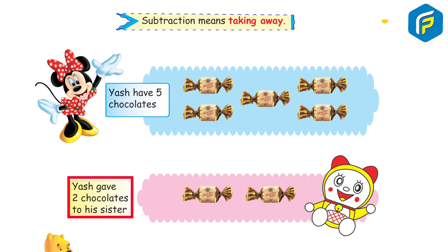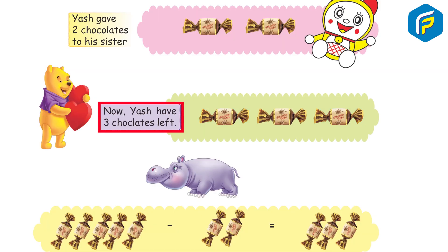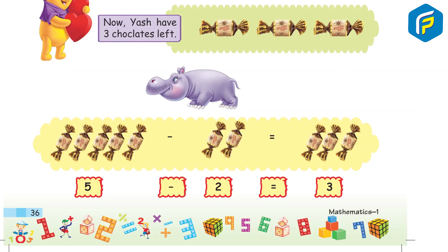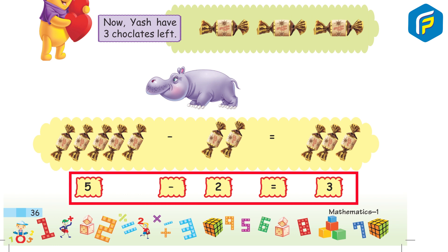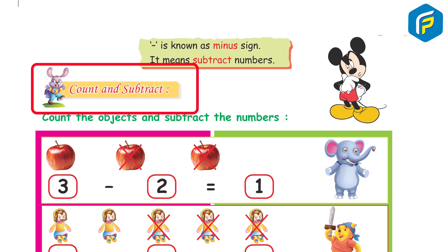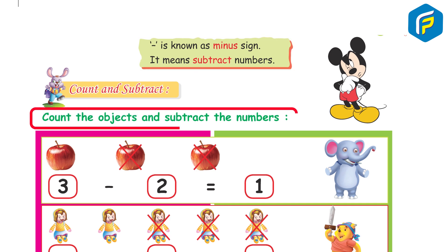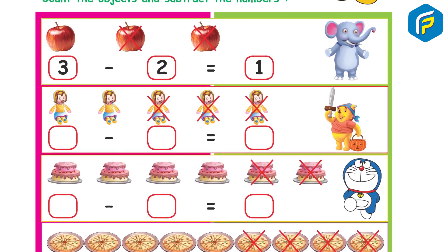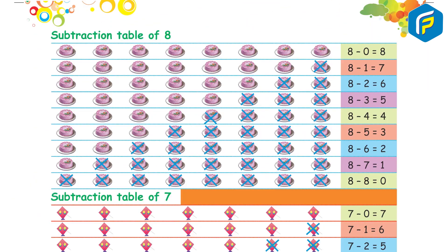Subtraction means taking away. Yash has 5 chocolates. Yash gave 2 chocolates to his sister. Now Yash has 3 chocolates left. 5 minus 2 is equal to 3. The minus sign means subtract. Count the objects and subtract the numbers.